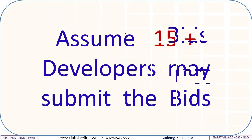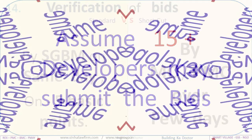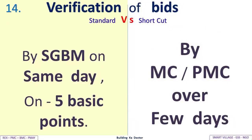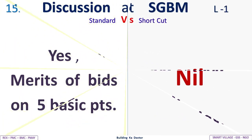Assuming 15-plus developers submit bids, verification of bids under the standard method is done by the SGBM on the same day, covering five basic points. Under the shortcut, verification is done by the MC or PMC over a few days — away from members' oversight.